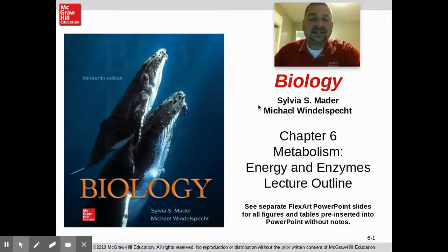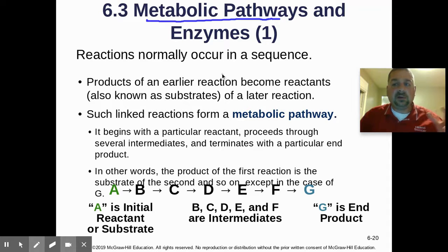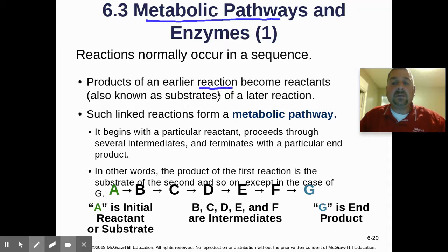We're covering section 6.3, the big one from this chapter, which covers enzymes and factors that affect enzymes. First, we want to look at what we call metabolic pathways. When we talk about metabolism, that's all those chemical reactions taking place in your body. Often one thing leads to the next, and we call that a metabolic pathway.